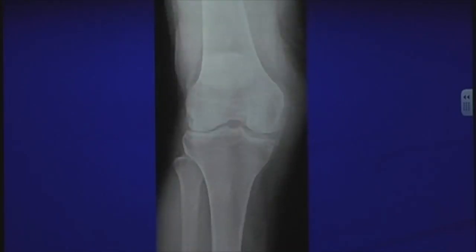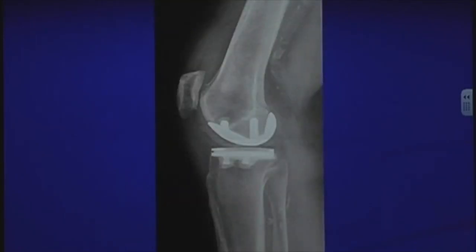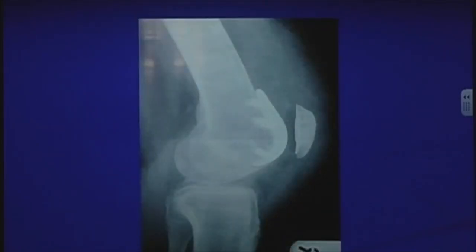Here's an example of a patient with a valgus deformity — arthritis on the outside of the knee — and the lateral compartment implant on x-ray. Also shown is a patient who had a patellofemoral arthroplasty: the back side of the kneecap is replaced with a piece of plastic and a metal implant is placed on the thigh bone portion of the patellofemoral joint.